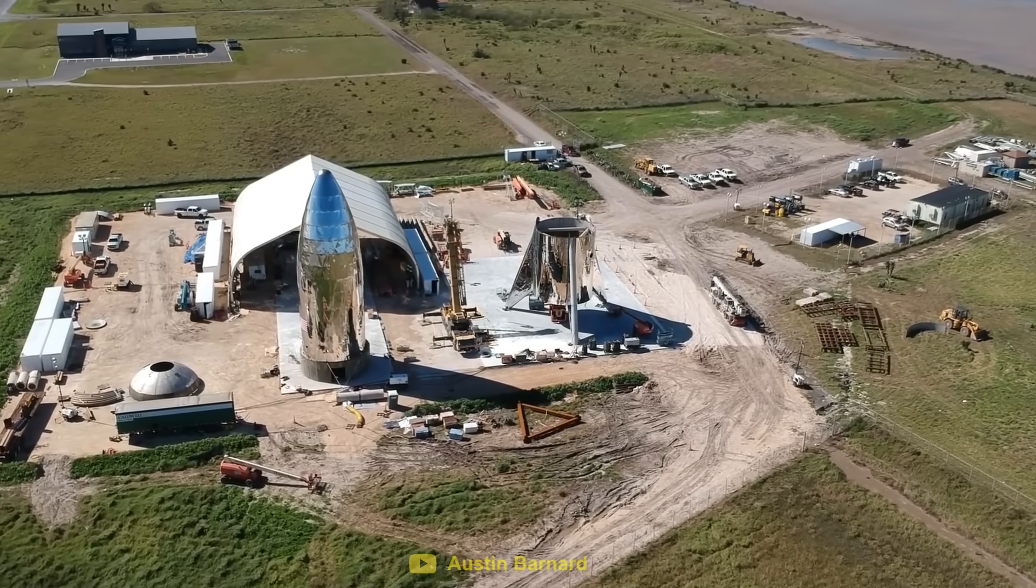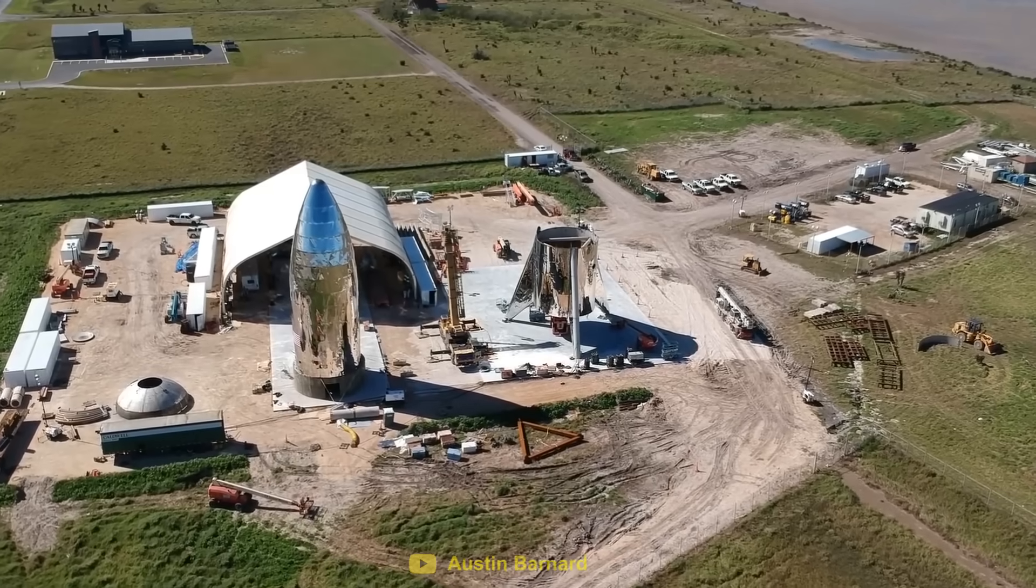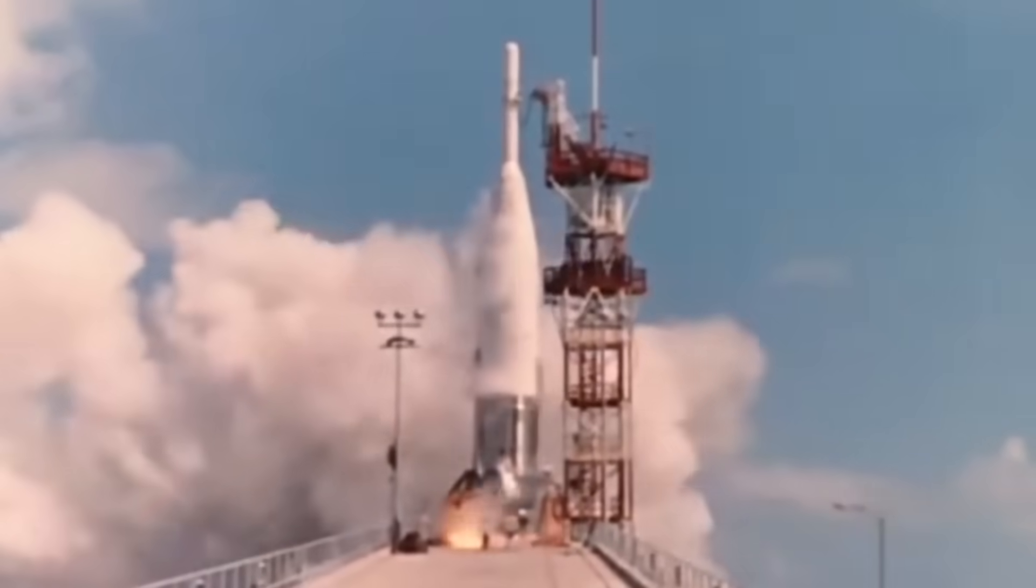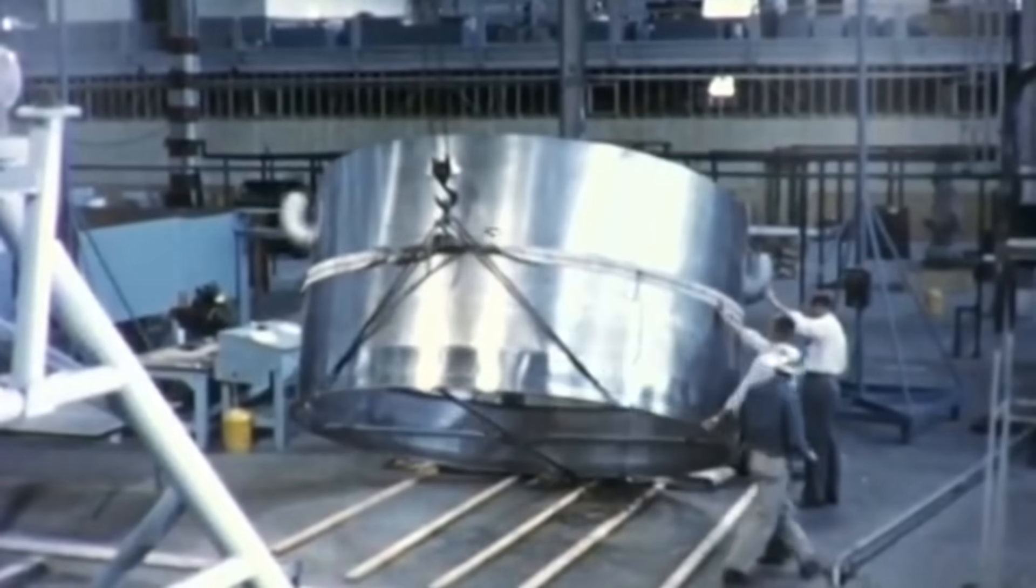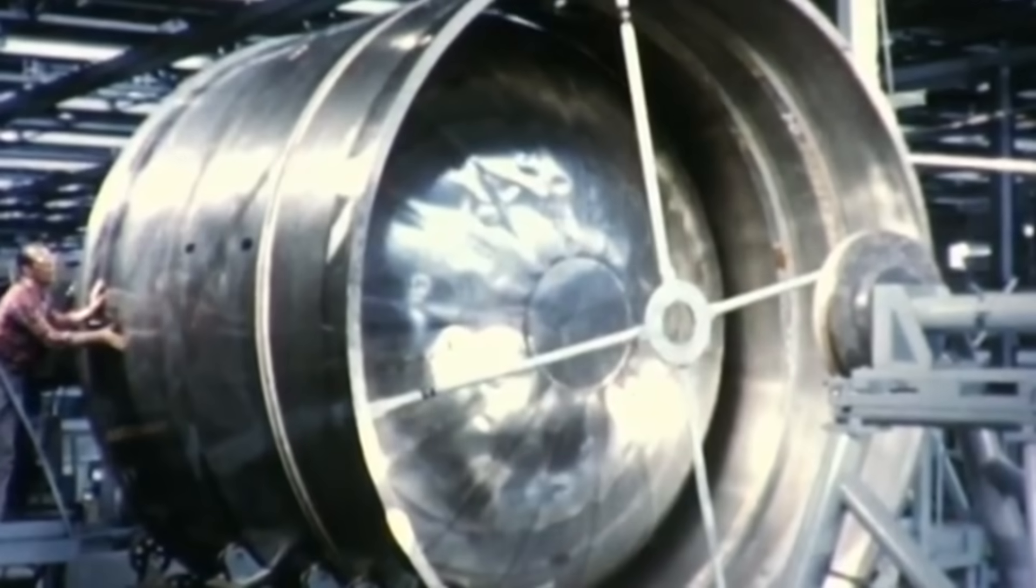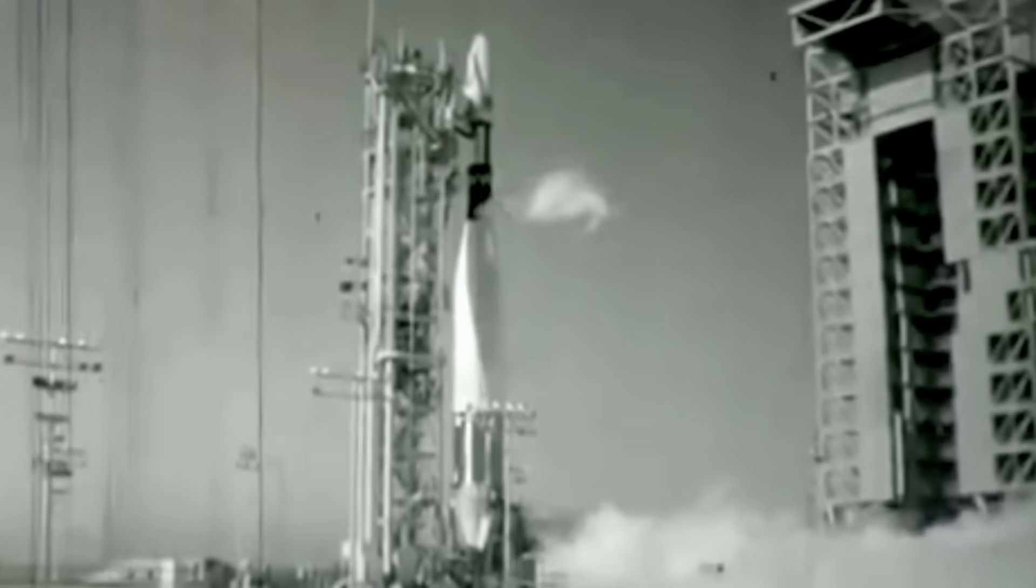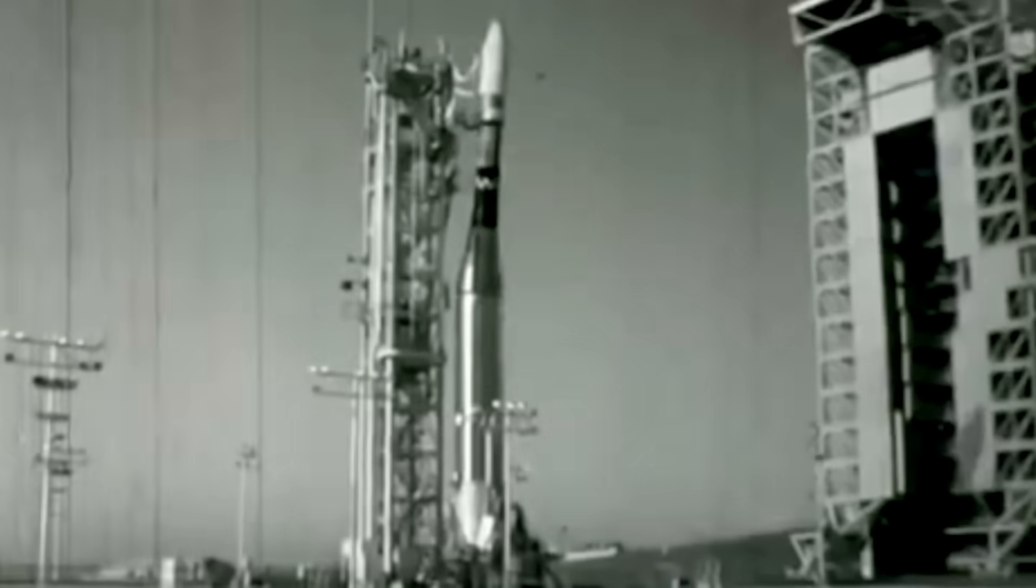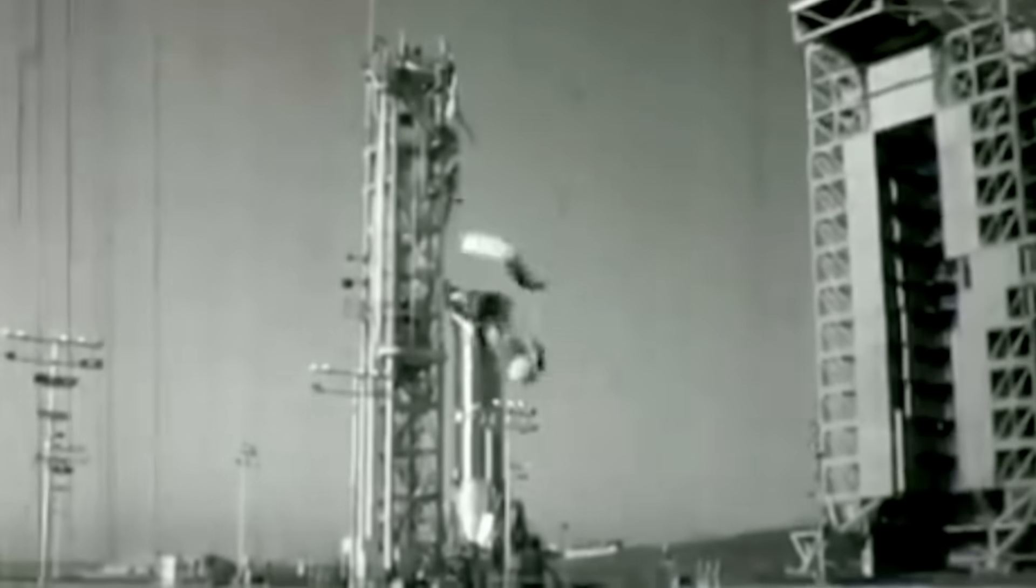But this wasn't the first stainless steel rocket to be made. Back in the 60s, NASA made an Atlas rocket out of an incredibly thin stainless steel. This was so thin, that unless the rocket was constantly pressurized, gravity alone would completely crush it. And it did.